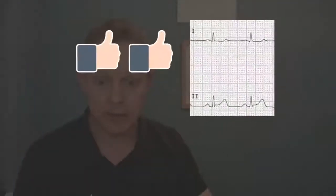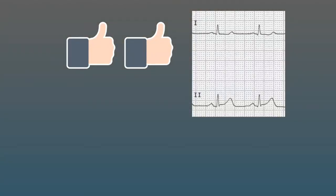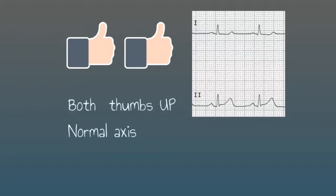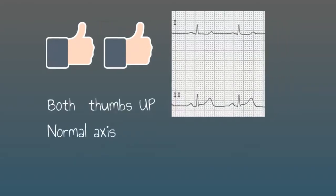Let's have a look at how we use that to calculate the QRS axis. Here we've got lead one and there's an R wave, there's no S wave - it's predominantly upwards so our left thumb goes up. Lead two, again you've got an R wave, there's no S wave, it's predominantly upwards - put your right thumb up as well. And that means we've got a normal axis; both thumbs are up.